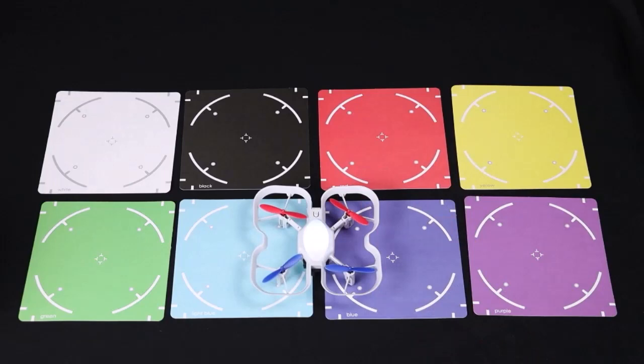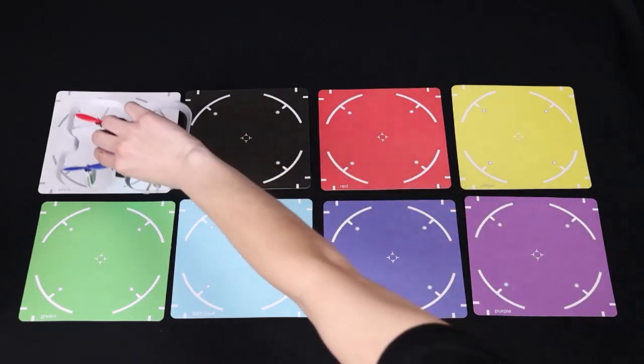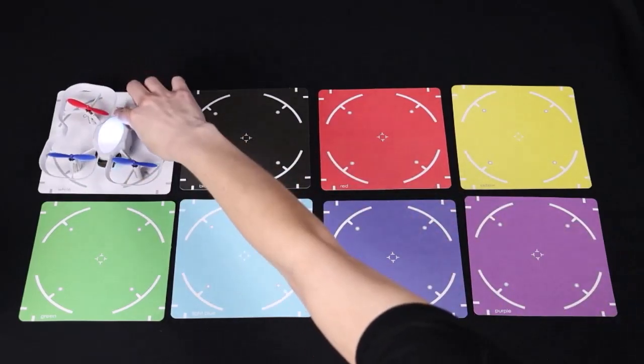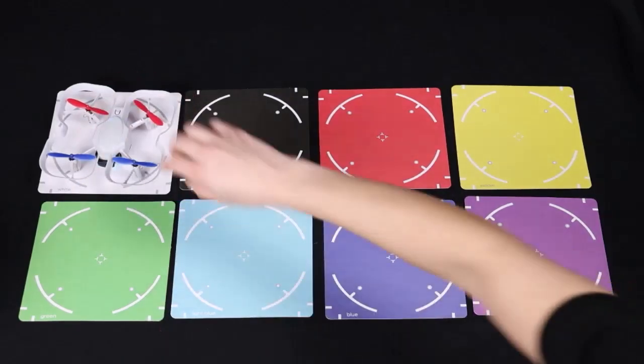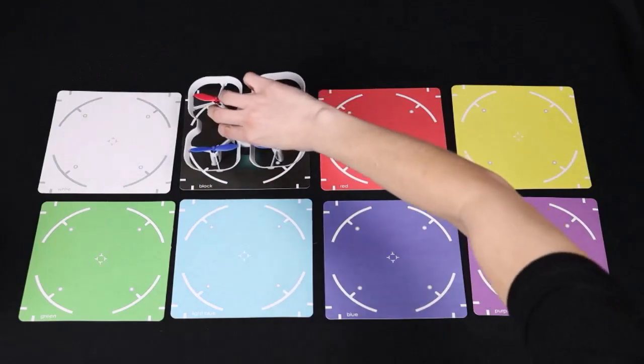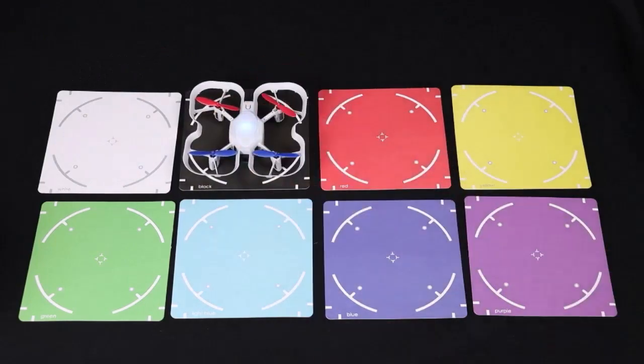The drone will play a sound sequence and then change color. You will match through the drone with the color display starting with white. Place the drone on the white color card and press the action button again. The drone will beep then change to the next color. Continue these steps until you have completed calibrating all of the color cards.